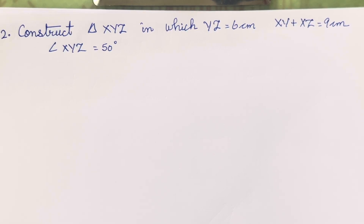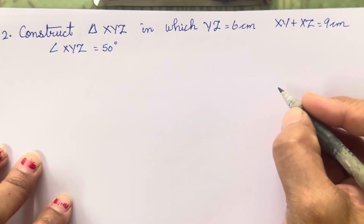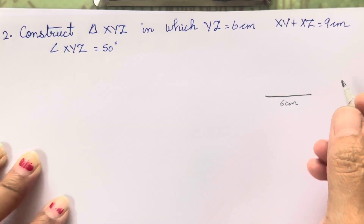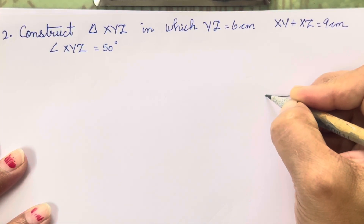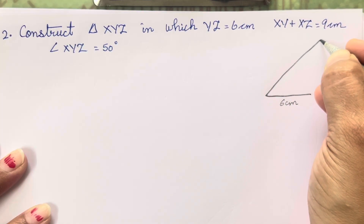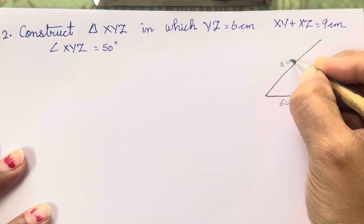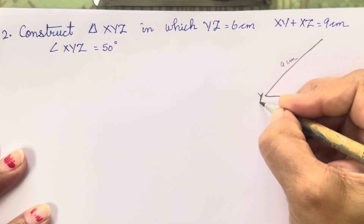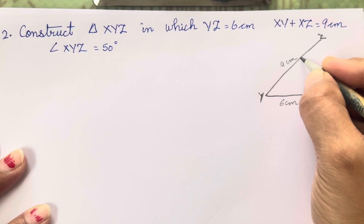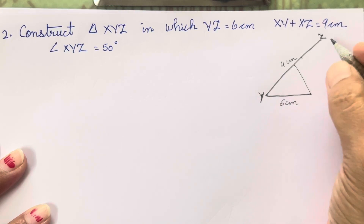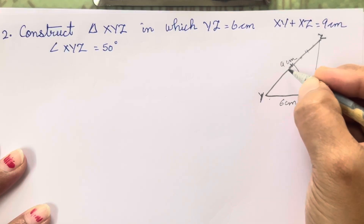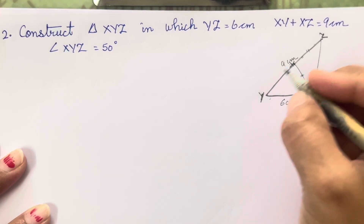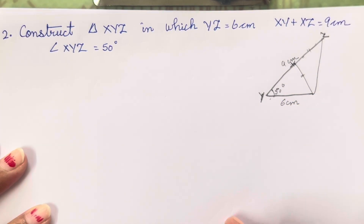Let's move on to the second one. Construct triangle XYZ in which XY is 6 centimeters, and XY plus XZ is 9 centimeters. X will come in between. The angle at Y is 50 degrees. So this is our rough figure. X will be marked on the extended ray, with the extended length being 9 centimeters. According to this rough figure, we are going to construct our triangle.